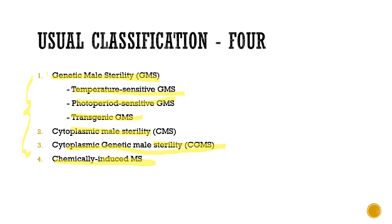In this particular lecture we are only covering TGMS and PGMS, which come under genetic male sterility. In coming lectures we will cover CGMS and chemically induced male sterility. Regarding genetic male sterility: the reason it is called genetic male sterility is because the genes governing male sterility are present in the nucleus.